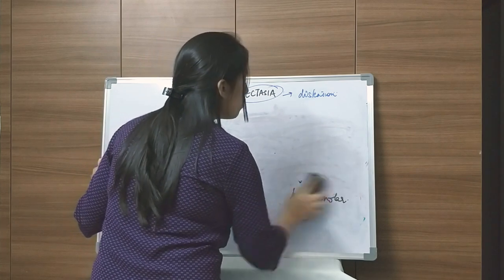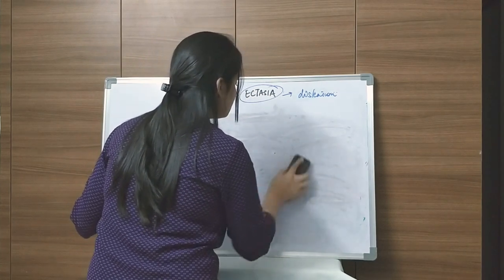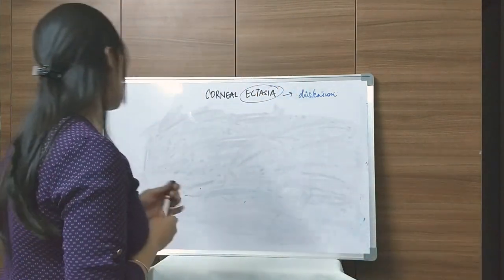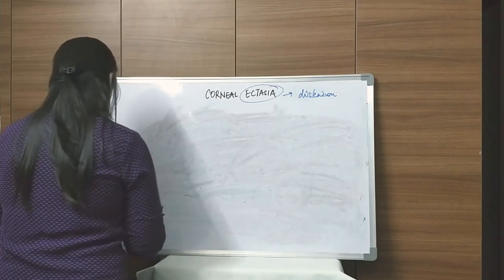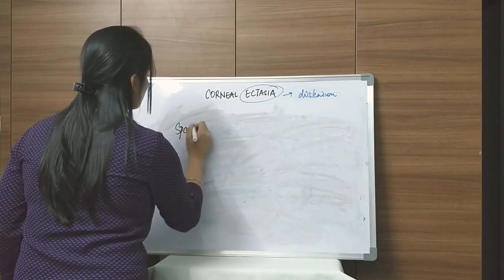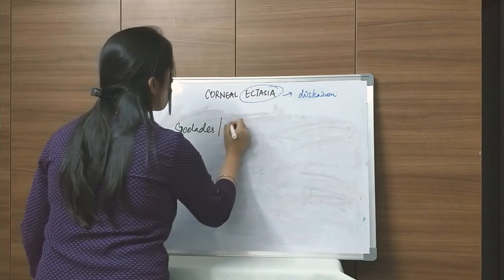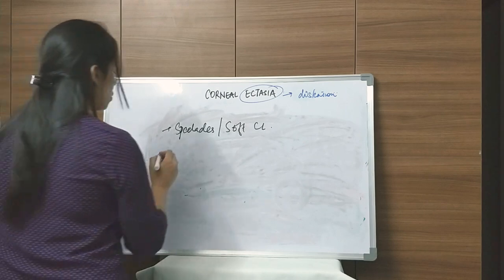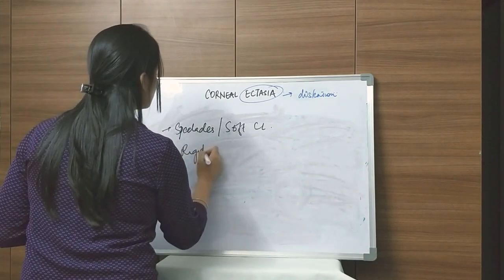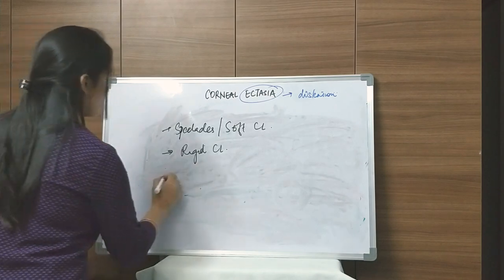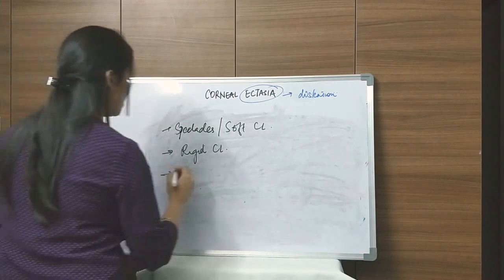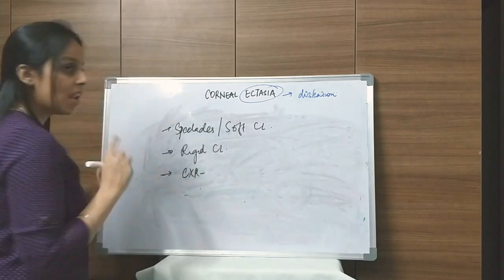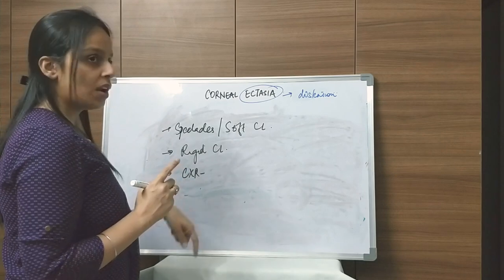How do you treat keratoconus? In early stages you can try spectacles or soft contact lenses. When keratoconus progresses you can try rigid contact lenses. Another important treatment, also very important from an MCQ point of view, is collagen crosslinking — CXL.